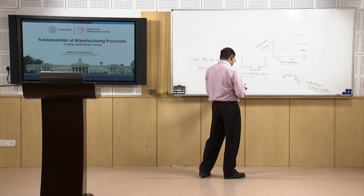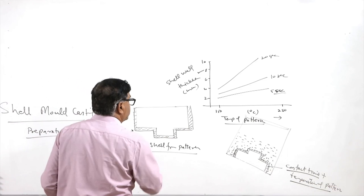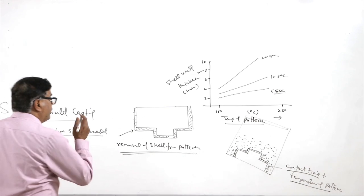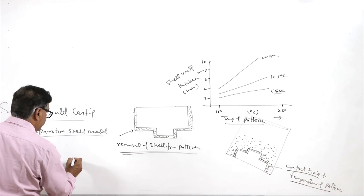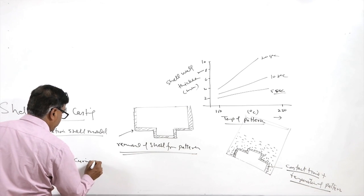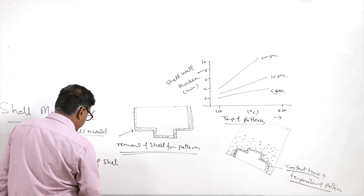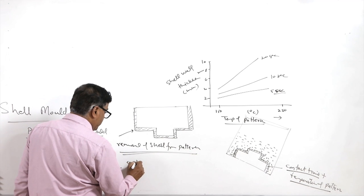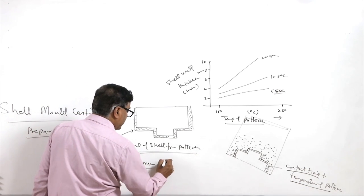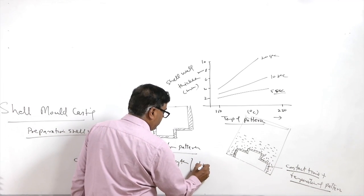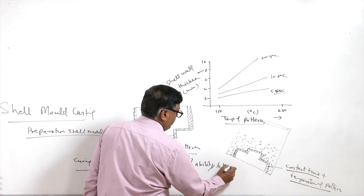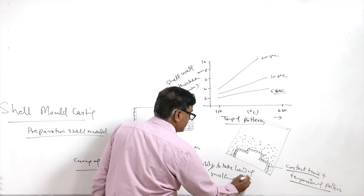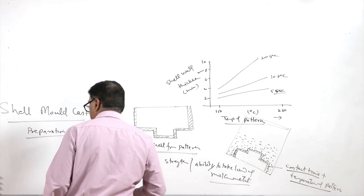Removal of the shell from the pattern is facilitated by spraying release agents over the surface of the pattern so that removal becomes easier. Once the shell has been removed, proper curing is done. Curing of the shell is performed in order to provide sufficient properties, and it must be done in an optimum manner so that the shell gets the desired strength and ability to take the load of the molten metal — that is, the ability to handle the metallostatic pressure.